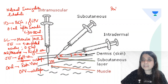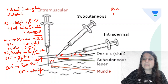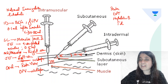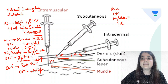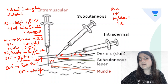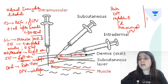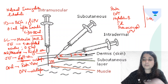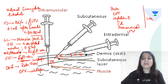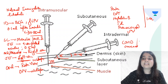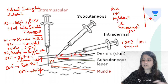All the other vaccines — whether it is Penta, DPT, all T-series vaccines, Hepatitis B, TD vaccine, pneumococcal, and IPV — all of these are given intramuscularly. COVID vaccines are also given intramuscularly.